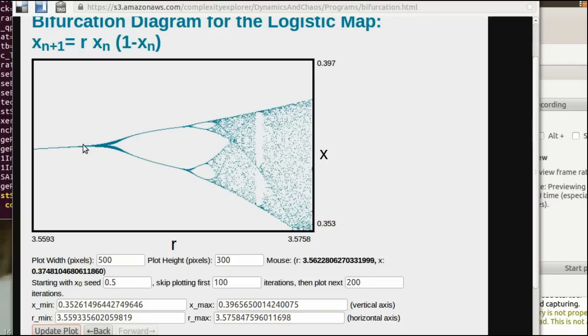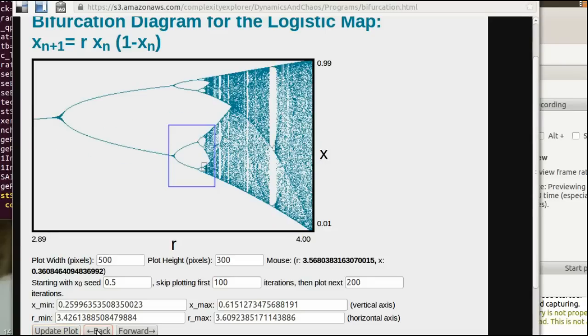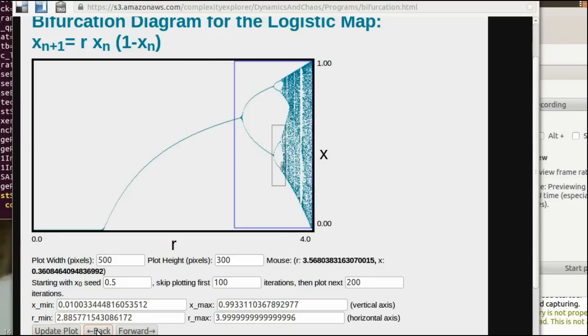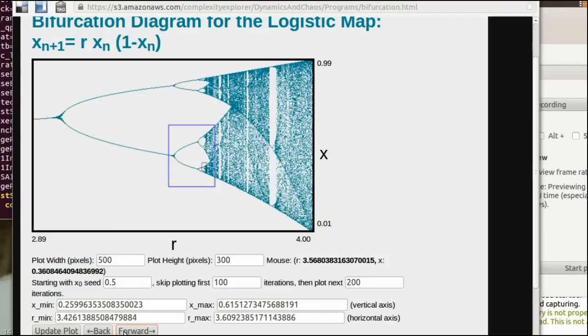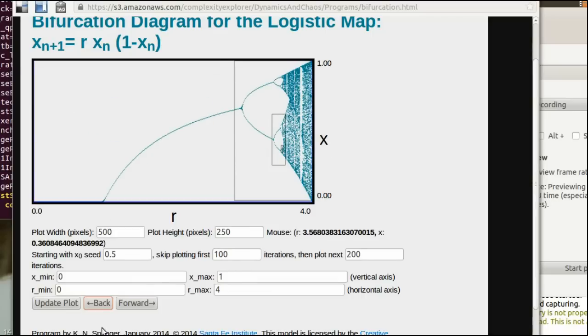And we can see bifurcations. So this is some sort of period doubling bifurcation. This splits into two. Each of those split into two and so on. So we see the same general shape appearing again and again. And once you have a bunch of rectangles selected, you can move through them backwards and forwards.